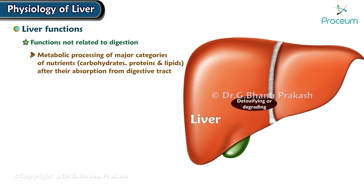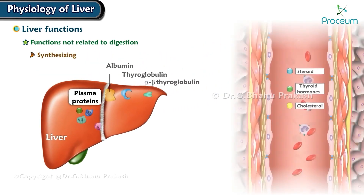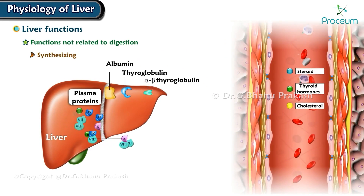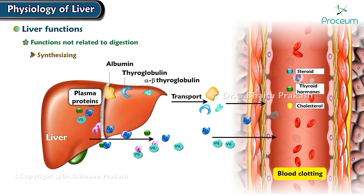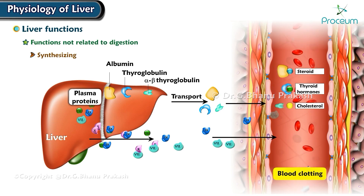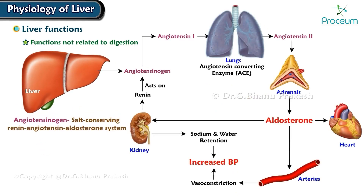Detoxifying or degrading body wastes and hormones, as well as drugs and other foreign compounds. Synthesizing plasma proteins, including those needed for blood clotting, those that transport steroid and thyroid hormones and cholesterol in the blood, and angiotensinogen, which is important in the salt-conserving renin-angiotensin-aldosterone system.